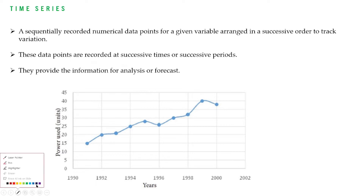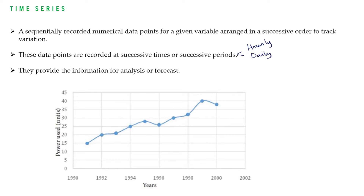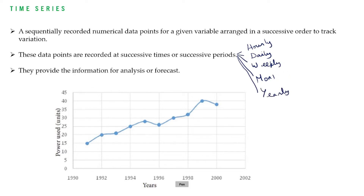We can see the temperature being recorded on a daily basis, or the rainfall may be recorded on a weekly basis and so on. These successive times or successive periods can be hourly, daily, weekly, monthly, or even yearly. The data points are recorded at successive intervals.